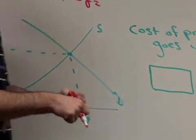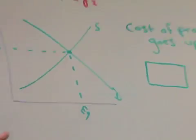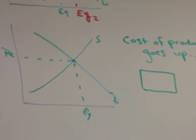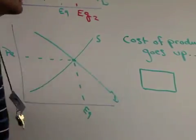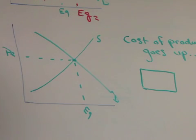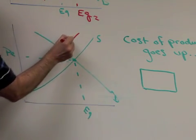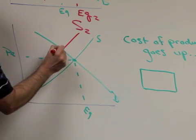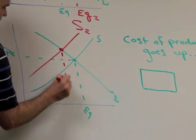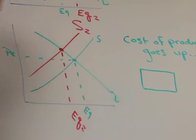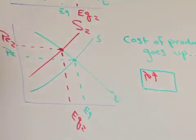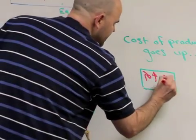Second situation: cost of production goes up. It makes it more difficult for the business — they're probably not going to be as willing and able to produce as much at each and every price. This situation makes it harder for the business to produce, so now they're going to produce less. Here is the supply decrease, shifting back towards the lower quantities. We get a new equilibrium point — new equilibrium quantity has clearly gone down, and the price is now higher, PE2. So price went up and quantity went down.